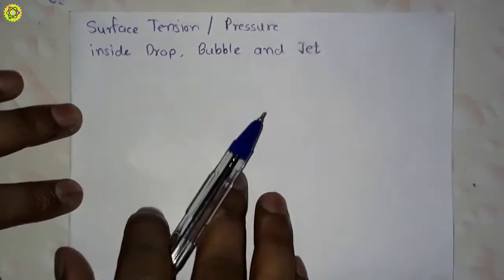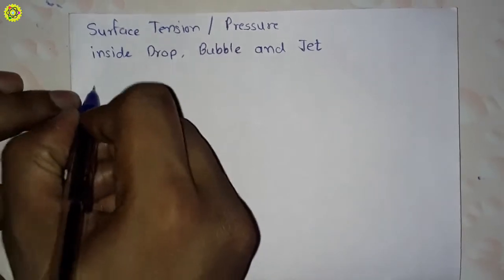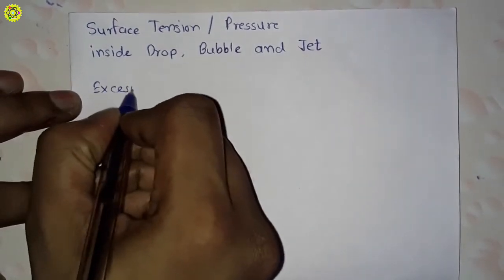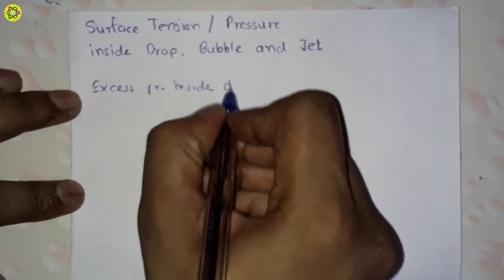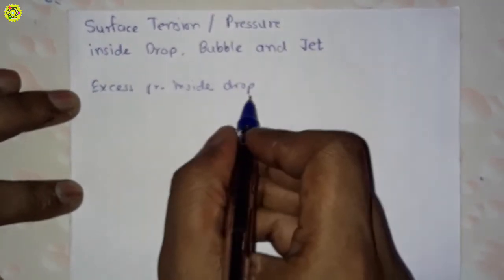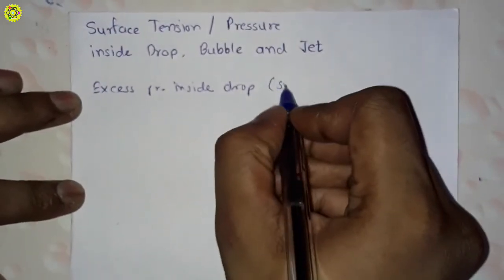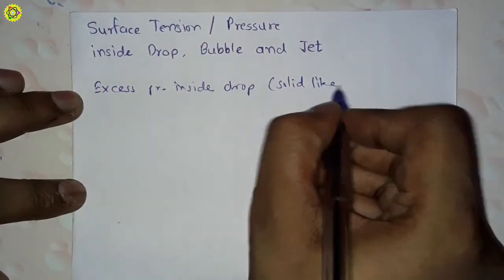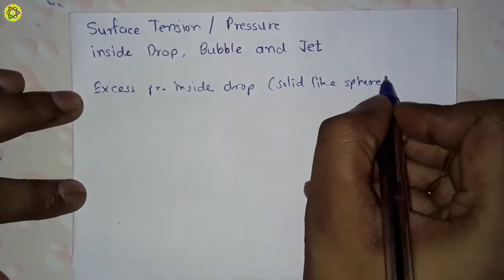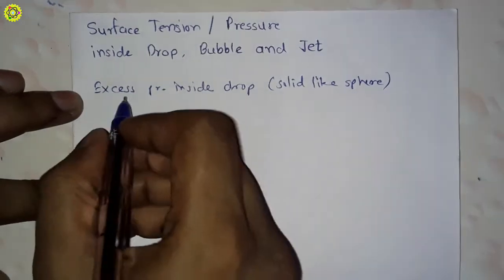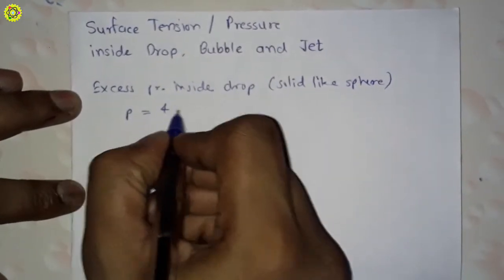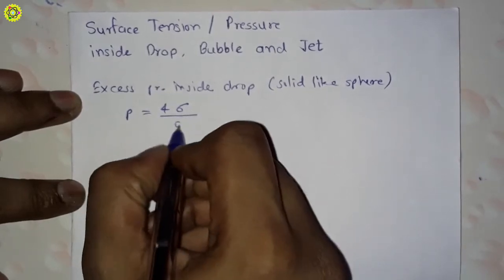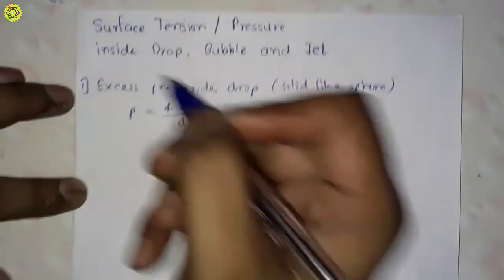So here, excess pressure inside drop—that is, liquid drop. It is a solid-like sphere. For this, P = 4σ/d. This is our first formula.